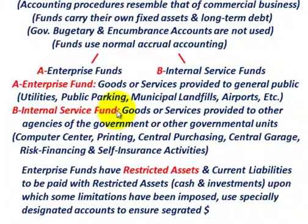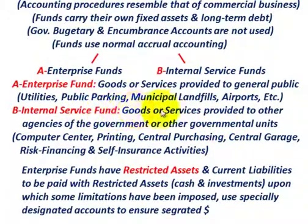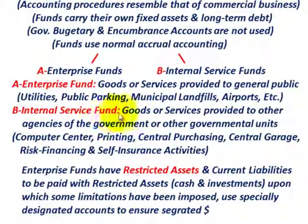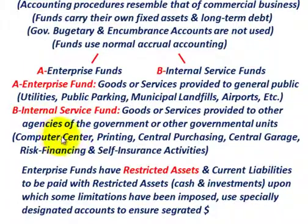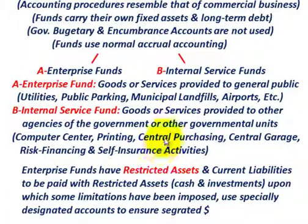For the internal service fund, goods or services are provided to other agencies of the government or other governmental units. So the internal service fund provides goods or services to other departments within the governmental body — within the city, for example. Those could include a central computer center, central printing, central purchasing, a central garage, and any risk financing and self-insurance activities. So the internal service fund provides goods and services to agencies or departments within the governmental unit.